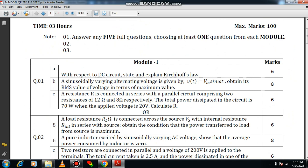Question number 1c is a numerical example. A resistor R is connected in series with a parallel circuit comprising 2 resistances of 12 ohm and 8 ohm respectively. The total power dissipated in the circuit is 70 watts. When the applied voltage is 20 volt, you need to calculate the resistor R. How to calculate the resistance value? So first you better draw the diagram. You need to convert the statement into a simple diagram. Then only we can solve this.